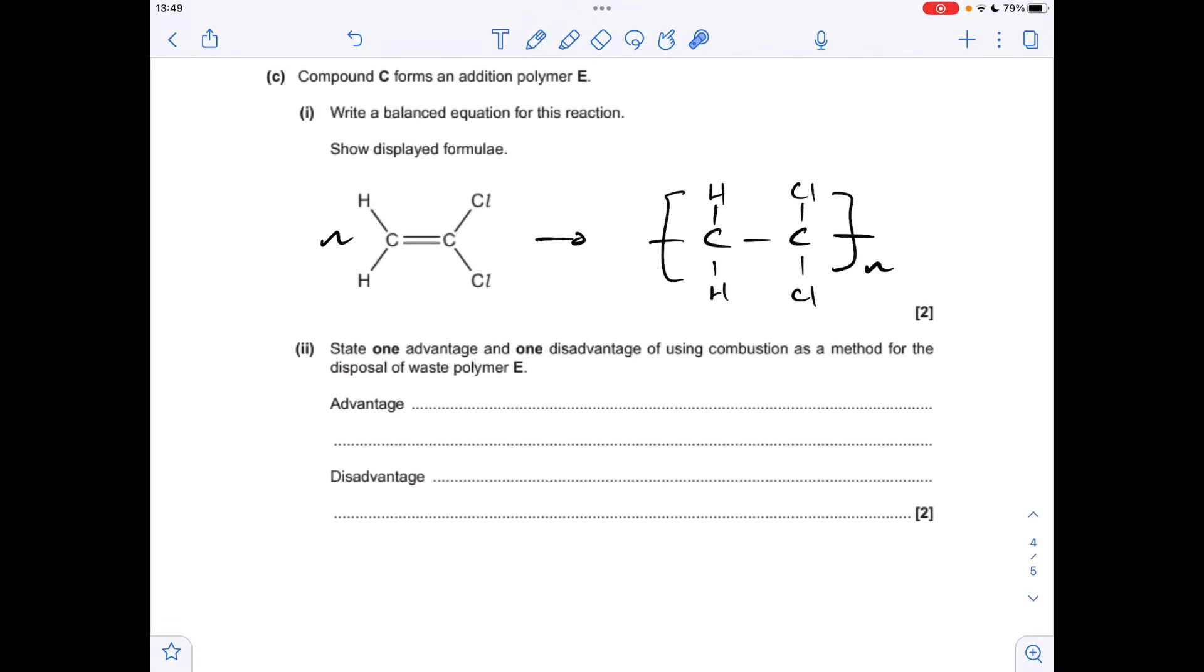And the disadvantage of combusting polymer E is down to the fact that it's got chlorine in it and it's going to produce hydrogen chloride, which is an acidic gas and highly corrosive.